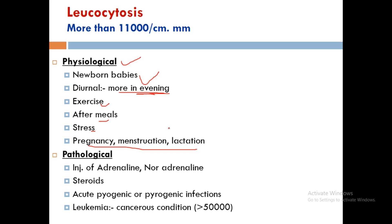Pathological causes of leukocytosis include: injection of adrenaline or noradrenaline, steroids, acute pyogenic or pyrogenic infection, and leukemia — a cancerous condition where the WBC count exceeds 50,000 cells per cubic mm of blood.